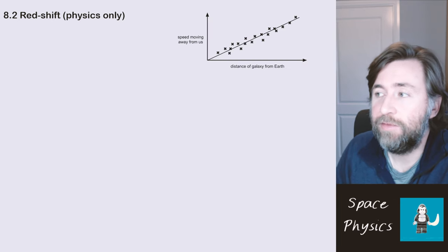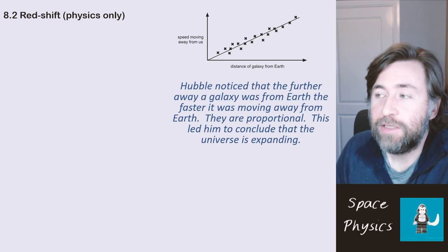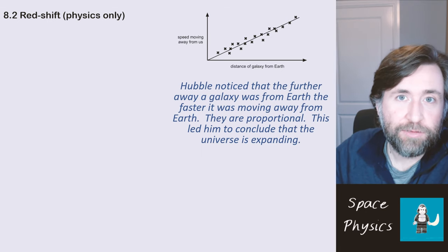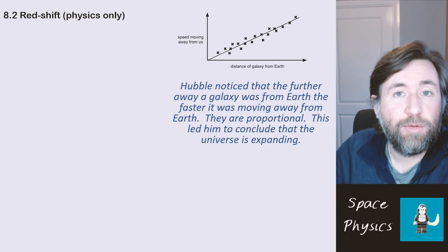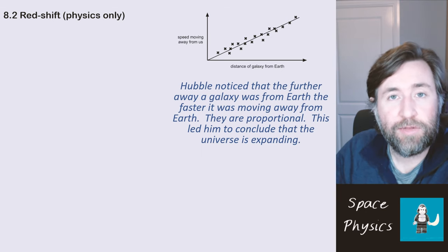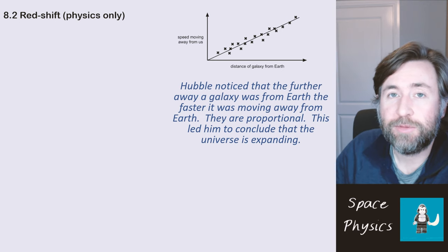And he actually went further than that. He found that the further away the galaxy was from us, the greater its speed was. So the faster an object is going away from us, the more that red shift is seen. He noticed in fact that they were proportional, that the distance was proportional to the speed of the galaxy moving away from us. So from that, he could conclude that the universe must be expanding.